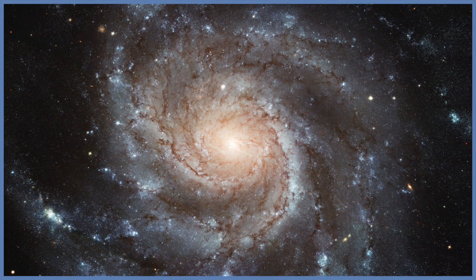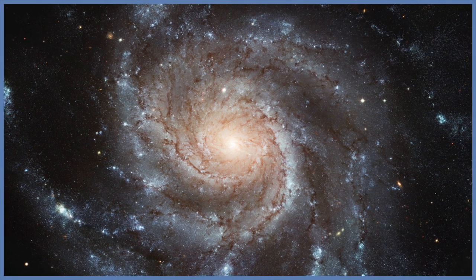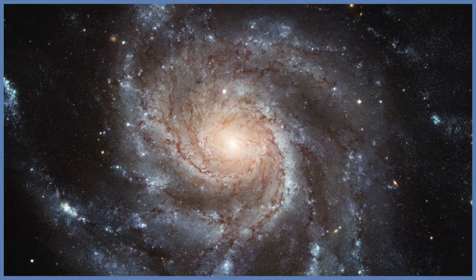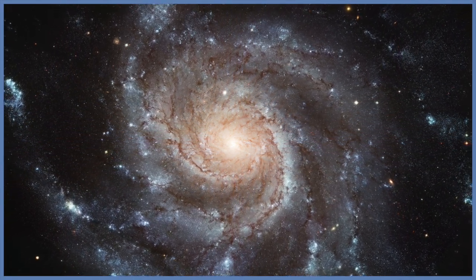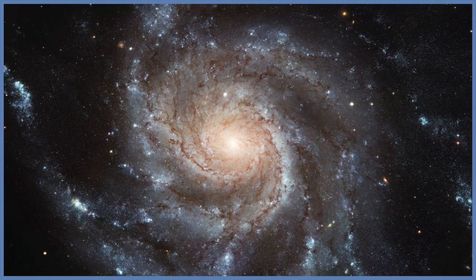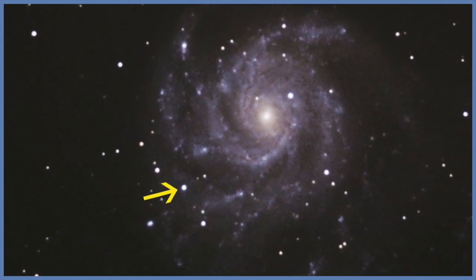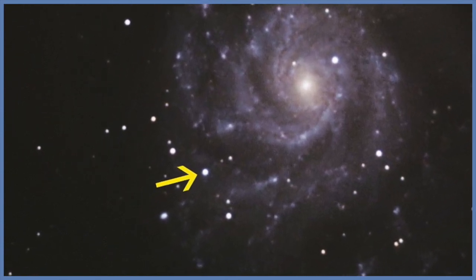So the most recent and nearby supernova of this type occurred in a spiral galaxy called Messier 101. This lies around 20 million light years away, so it's not a very close galaxy. It was first observed in August 2011, and was quite visible to small telescopes for weeks after the explosion.